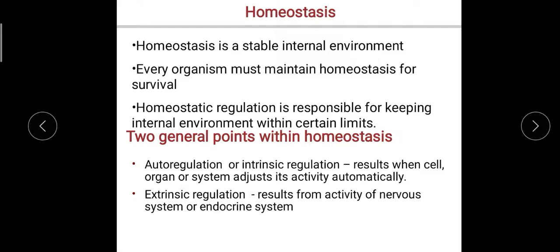The first is auto-regulation or intrinsic regulation. This occurs when cells, organs, or organ systems adjust their activity automatically. An example is your circulatory system — your circulatory system maintains blood flow, and if something changes, the organs in your circulatory system do something to bring back the natural blood flow. That is auto-regulation or intrinsic regulation.